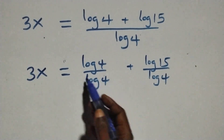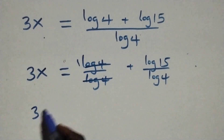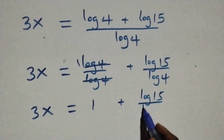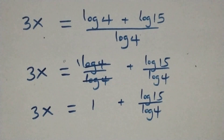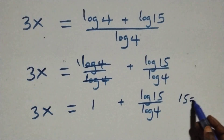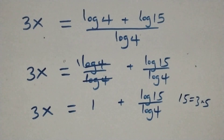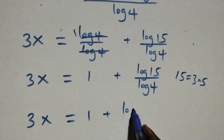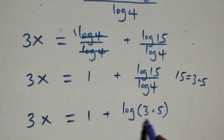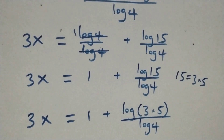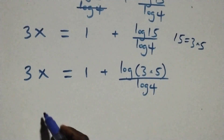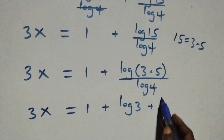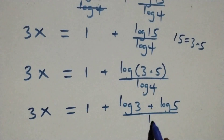That is, here log 4 over log 4 cancels to give 1. So 3x equals 1 plus log 15 over log 4. Then also, next step, 15 can be written as 3 times 5. So what we have here becomes 3x equals 1 plus log(3 times 5) over log 4. This also follows the log rule, so we have 3x equals 1 plus log 3 plus log 5, all over log 4.